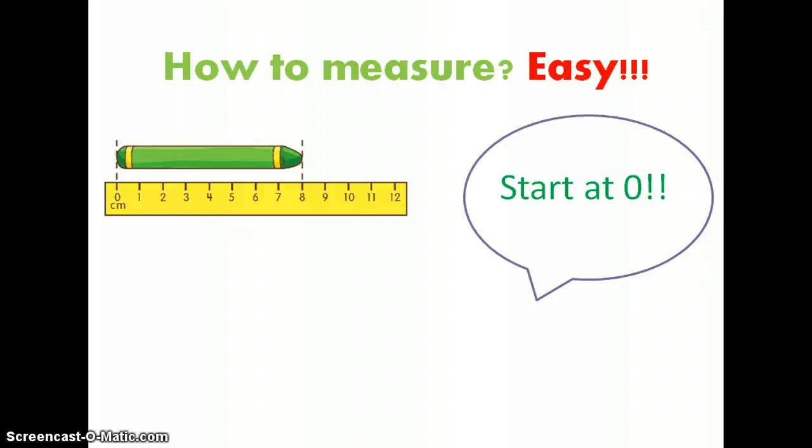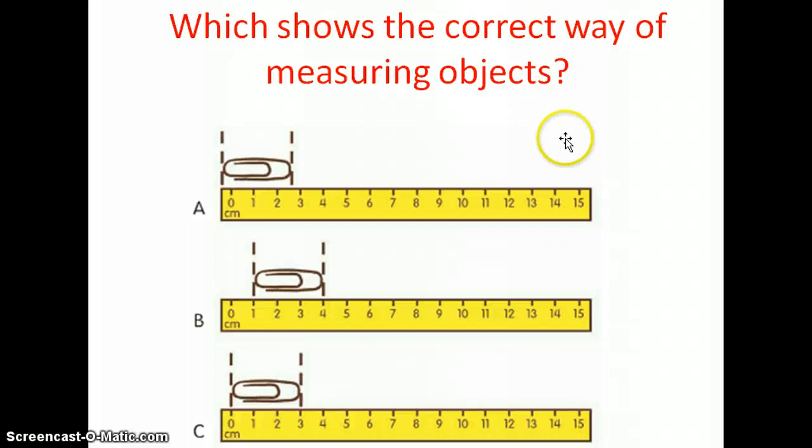Let's see if you can figure out how to measure on the next page. Here we have a question: Which shows the correct way of measuring objects? For A, the paperclip started at the end of the ruler. For B, they started measuring at one centimeter. And on C, they started measuring at zero. Which is the correct way to measure an object? Is it starting at the end of the ruler, starting at one, or starting at zero? If you said C, starting at zero, you are correct.